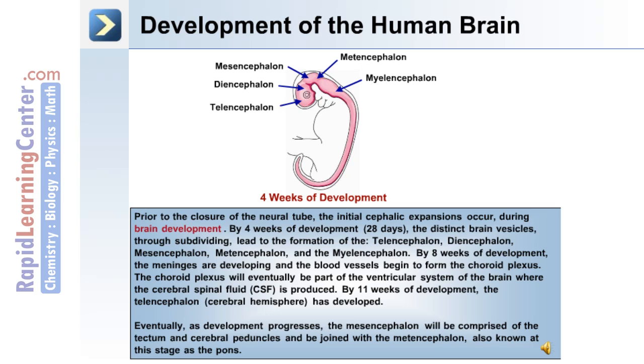By eleven weeks of development, the telencephalon, the cerebral hemisphere, has developed.